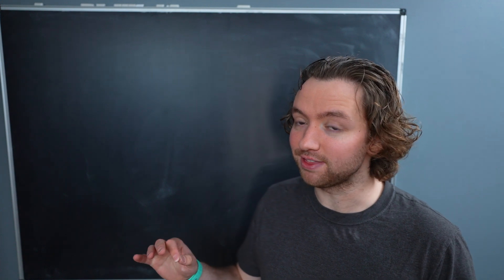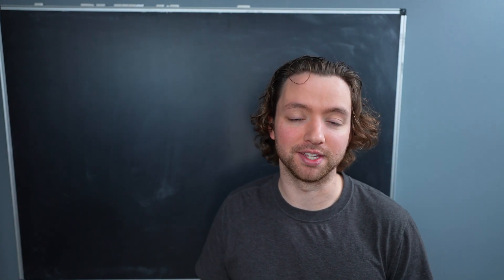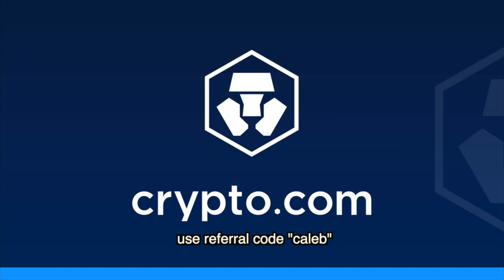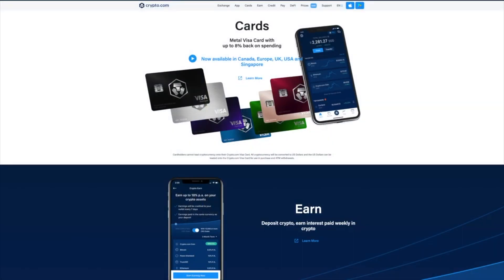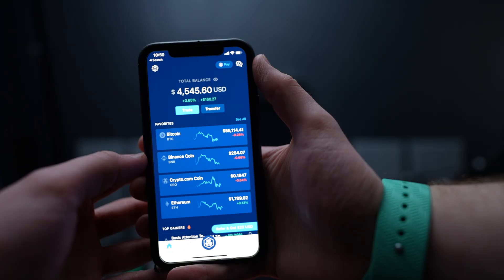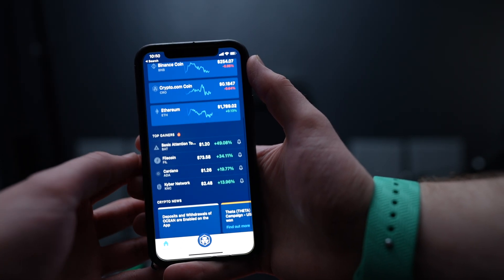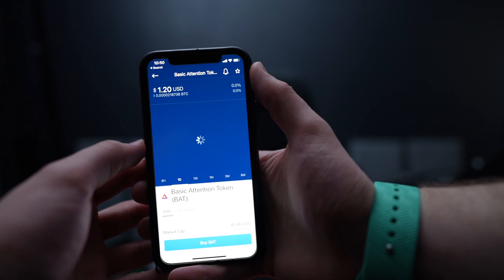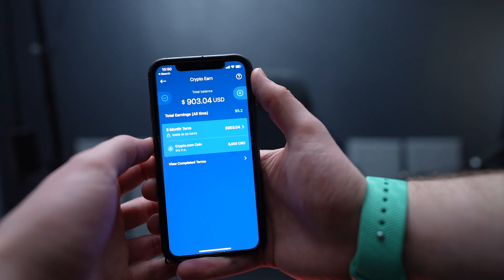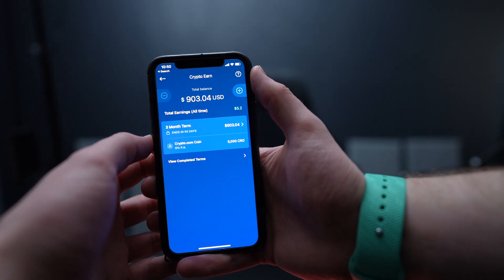Before we get started, be sure to check out our sponsor where you can actually buy Ethereum and get started with cryptocurrencies. Crypto.com is a simple app to buy and sell cryptocurrency with one of the largest selections. This is the perfect app to explore different cryptocurrencies, their prices and information about them.